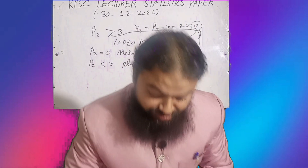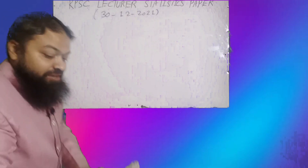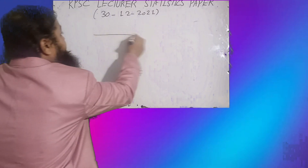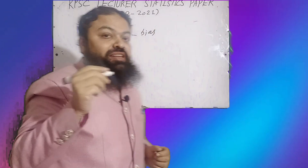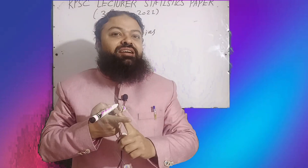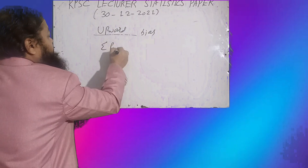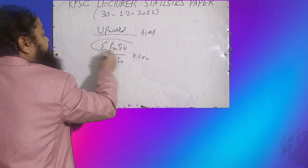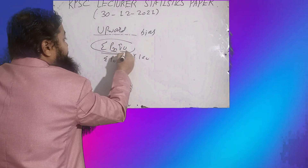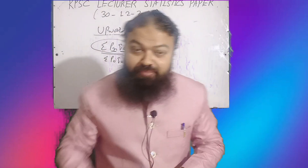The next question: Laspeyres index has upward bias. This is a very important technical, conceptual, and tricky concept that can be asked in written tests as well as interviews. The formula of Laspeyres is: summation of p_n * q_0 over summation of p_0 * q_0, multiplied by 100. We multiply the price of the new year with the quantity of the old year — that is why we have upward bias.